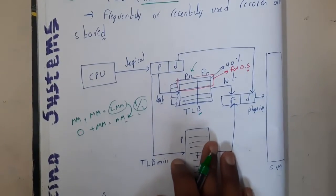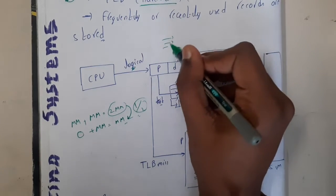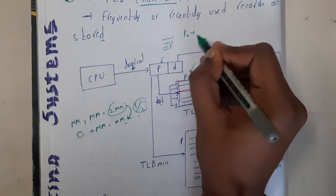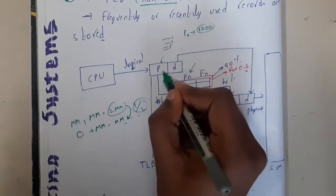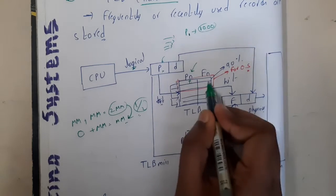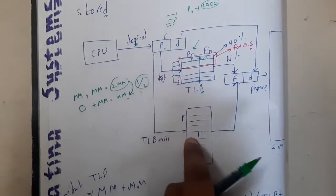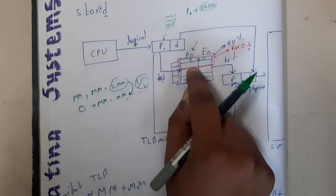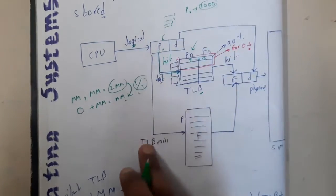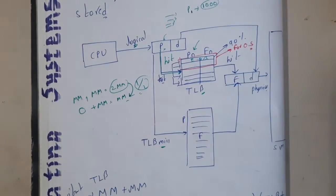Frequently or recently used records are stored in TLB. Assume you are running a program with 1000 lines — the CPU will request the next line again and again. If that program's page is stored in TLB, it will be automatically mapped and you get the result fast. The first time it fetches and stores in TLB. If found in TLB, it is called a TLB hit; if not found, it is a TLB miss.